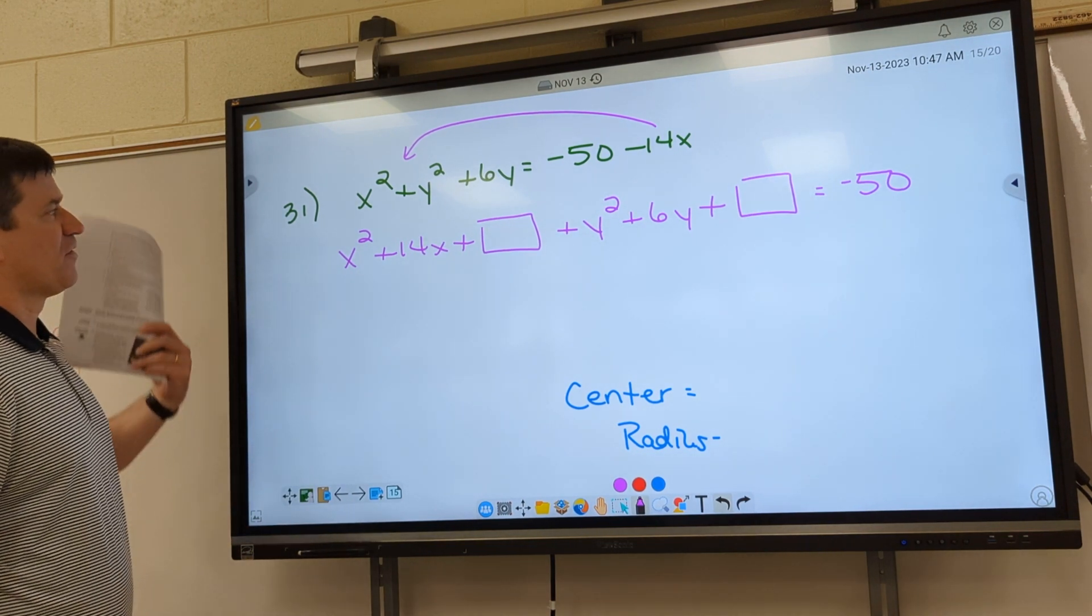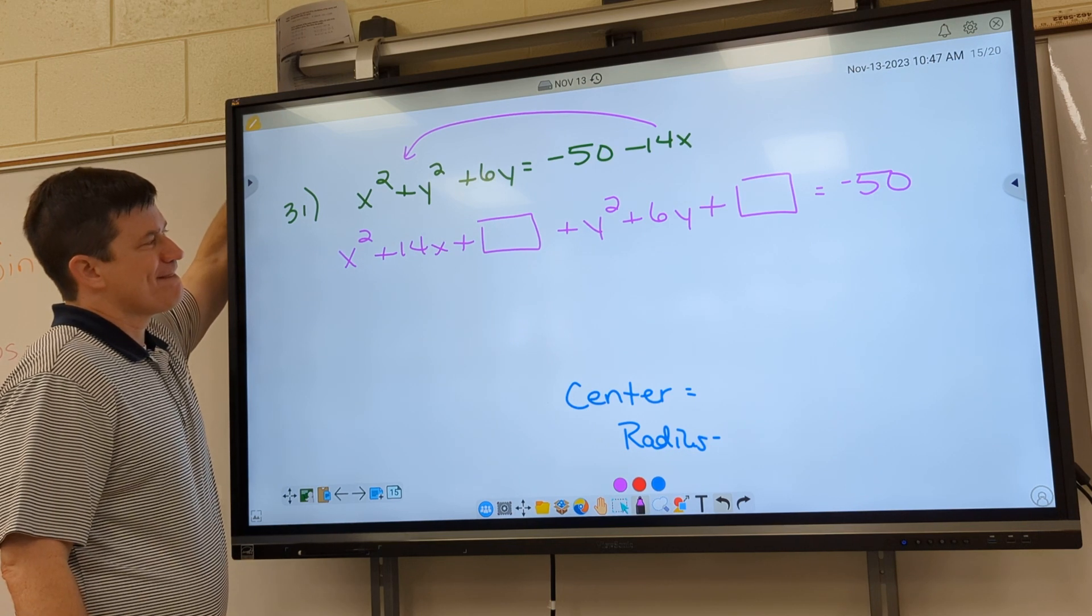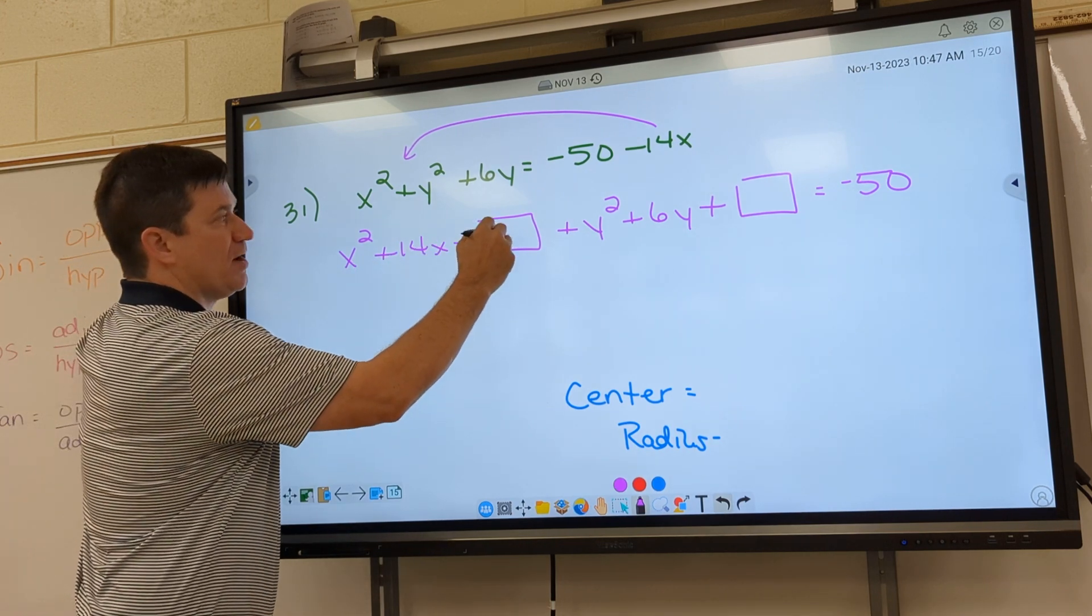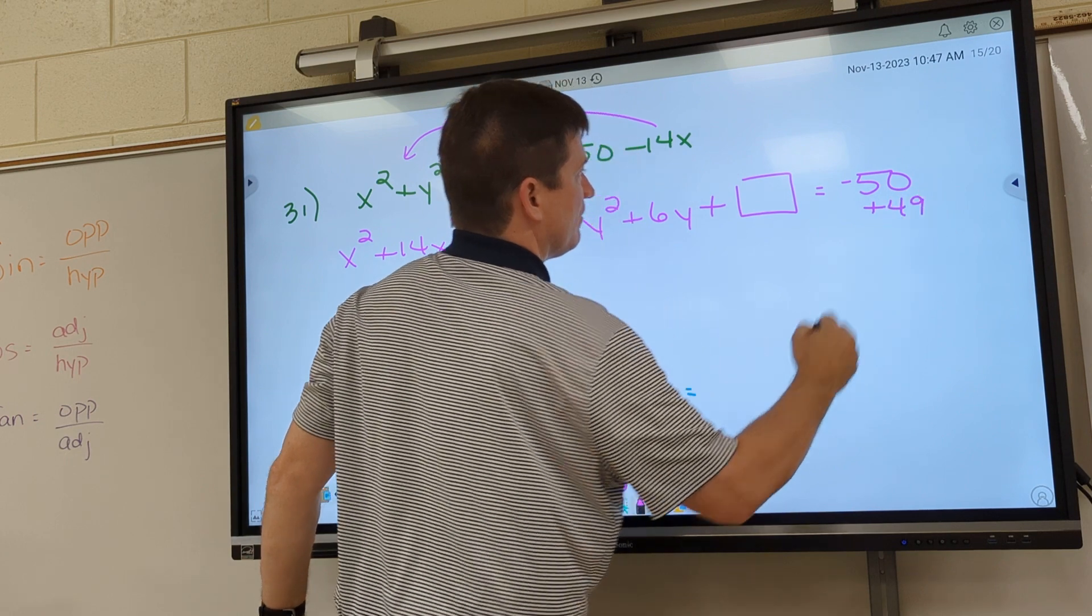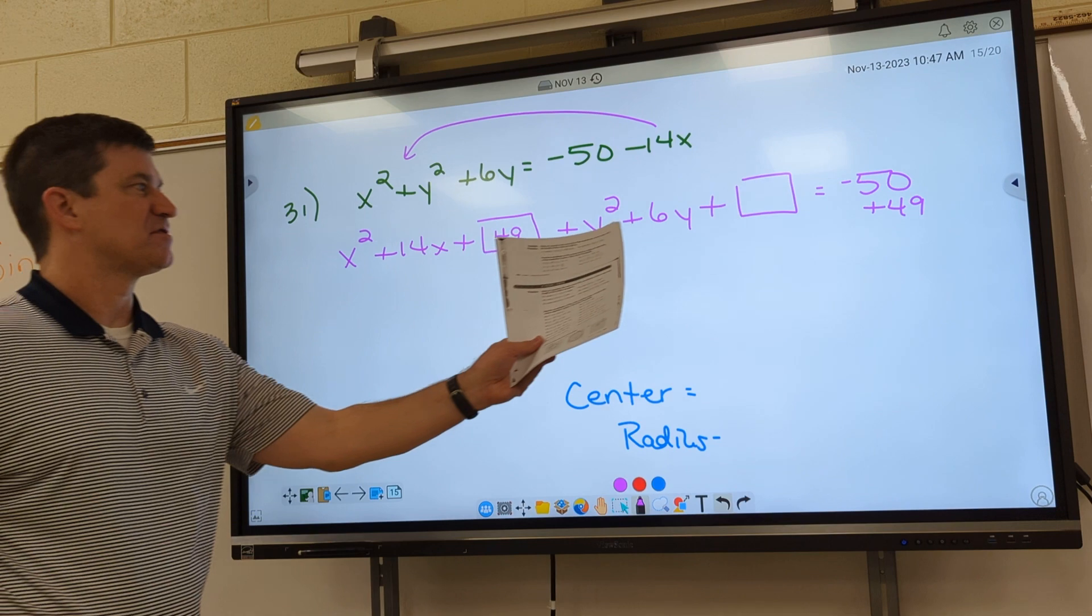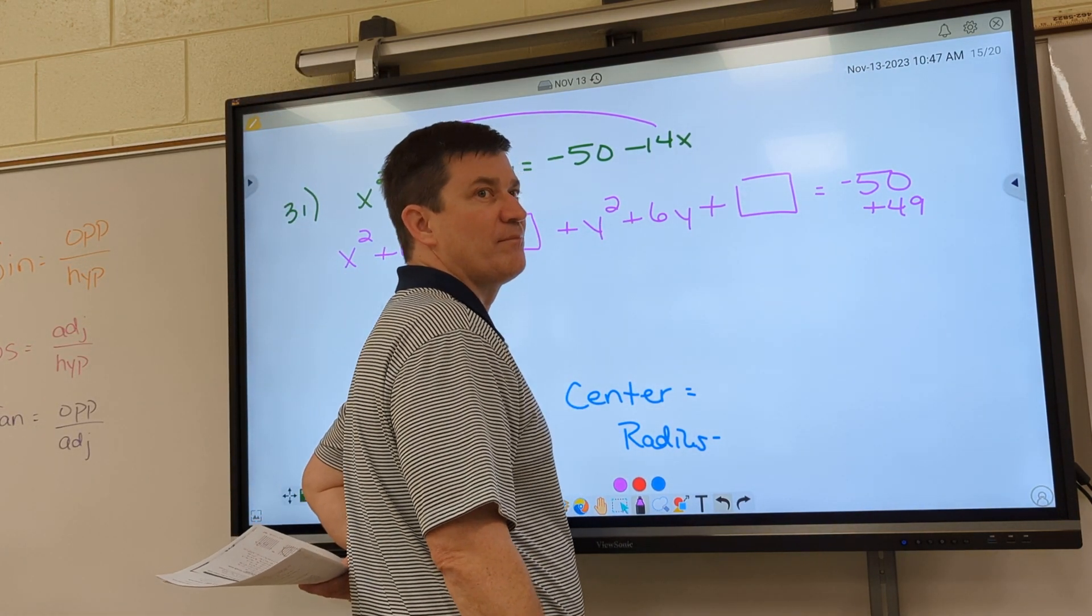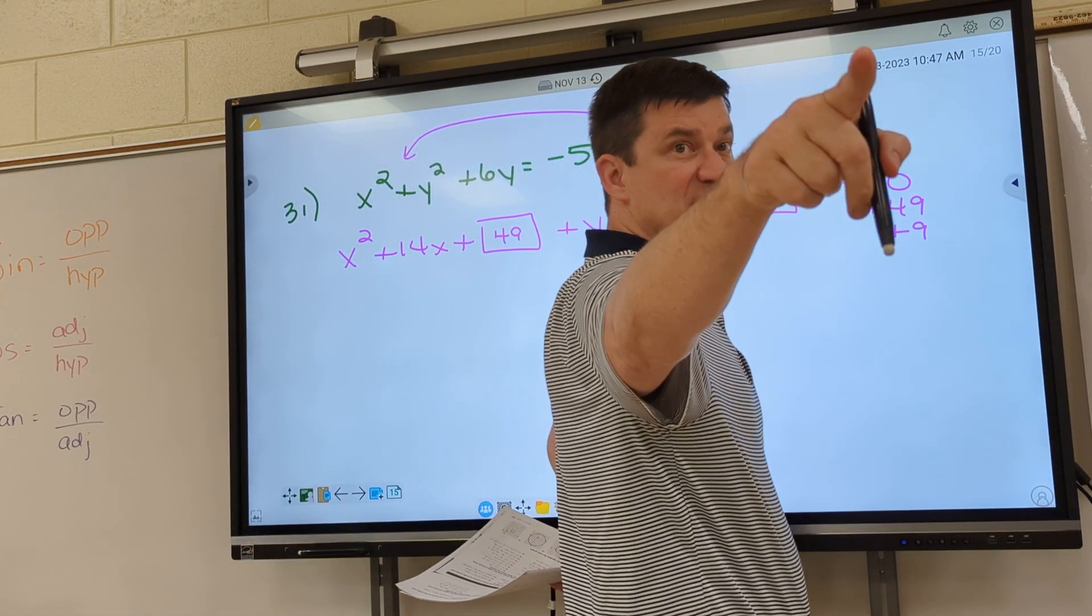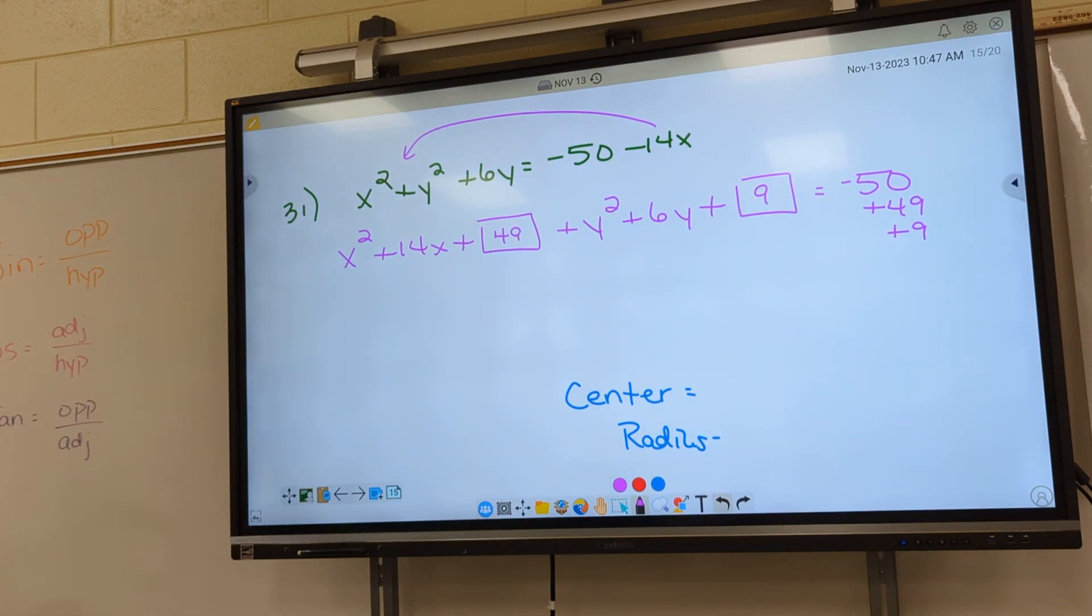And now you do it just like we've been doing. All right. Luke, help me on the first one. What's going to go in the box? Half of 14 is 7. Square that and you get 49. So it's plus 49 there. Plus 49 there. All right. Ashlyn, help me on the next one. Half of 6. Square it. So plus 9 there and plus 9 there. A lot of people said 6 this morning. They thought 3 squared. They weren't thinking. But you can look on the board. 3 squared is not.